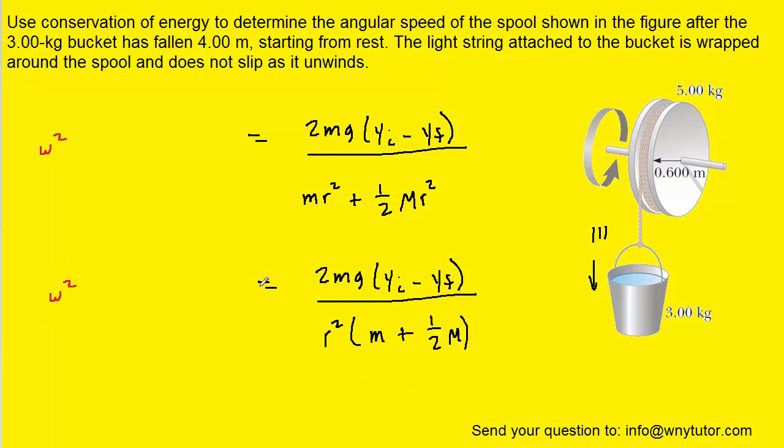And then finally we can take the square root of both sides. We can plug in the known values at this point. Notice that lowercase m was the mass of the bucket, and then the uppercase M, which is located right here, is the mass of the spool.